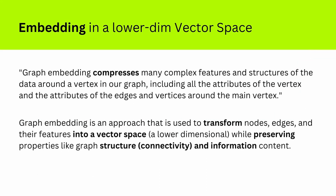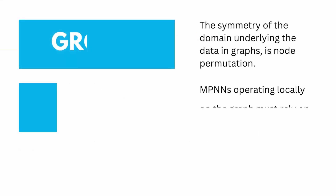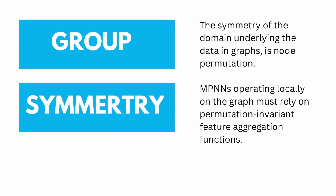Regarding embedding in a lower-dimensional space — finally, a low-dimensional vector space with all the tools for it. Graph embedding is an approach used to transform nodes, edges, and their features into a lower-dimensional vector space while preserving properties like graph structure, connectivity, and information content. Now let's start with the main part: it is about groups, symmetry, and the topology of the underlying space that the data is attached to.